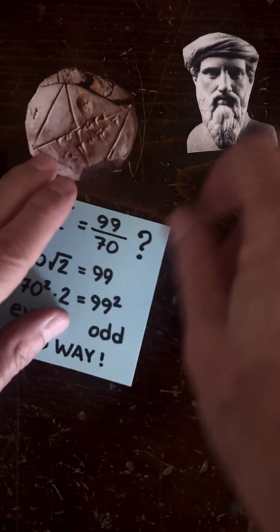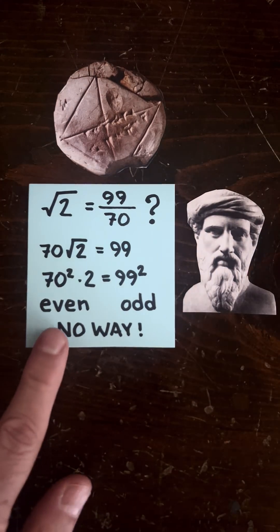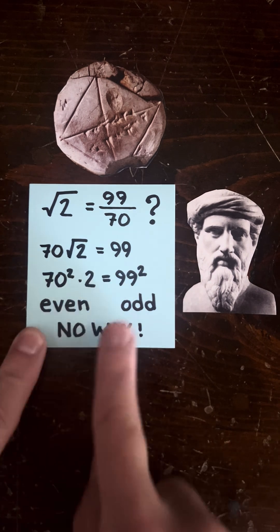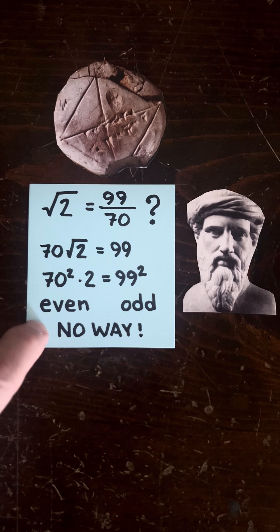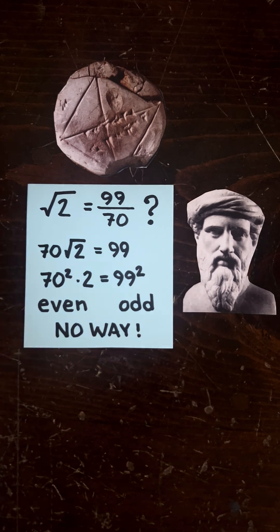And if a Babylonian came along and said, hey, the square root of two is 99 over 70, the Greeks would say, okay, let's multiply both sides by 70. Now let's square both sides. So 70² × 2, which is an even number, equals 99², which is an odd number. So that's impossible.